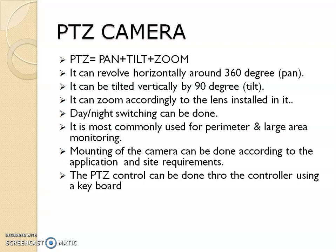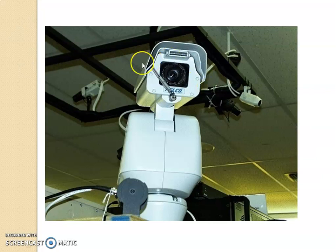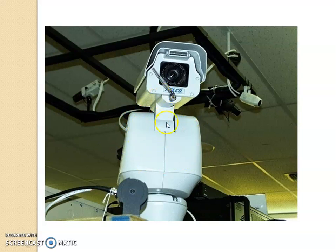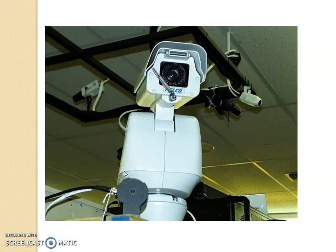Next is the PTZ camera, commonly called PTZ because it stands for Pan, Tilt and Zoom. This is how a PTZ looks. As you can see, this particular part of the camera will totally rotate 360 degrees, and the top connection can rotate 90 degrees. This means the camera can tilt 90 degrees and rotate 360 degrees, allowing it to cover half a hemisphere of the entire viewing area.